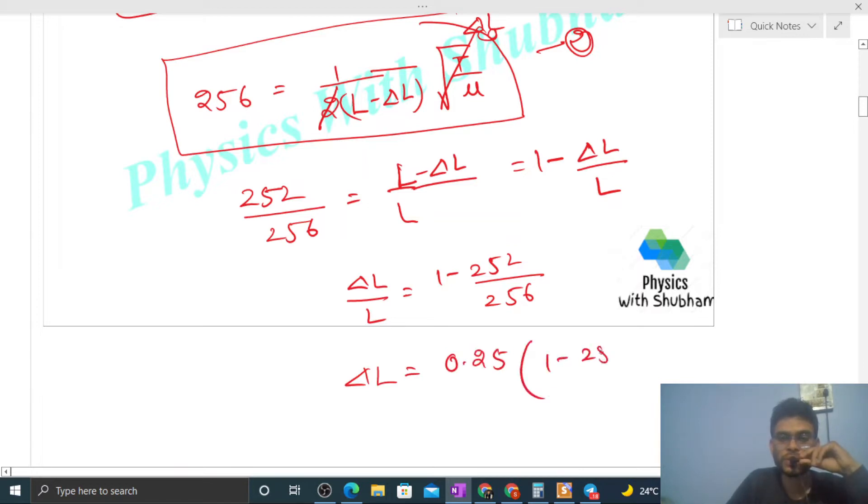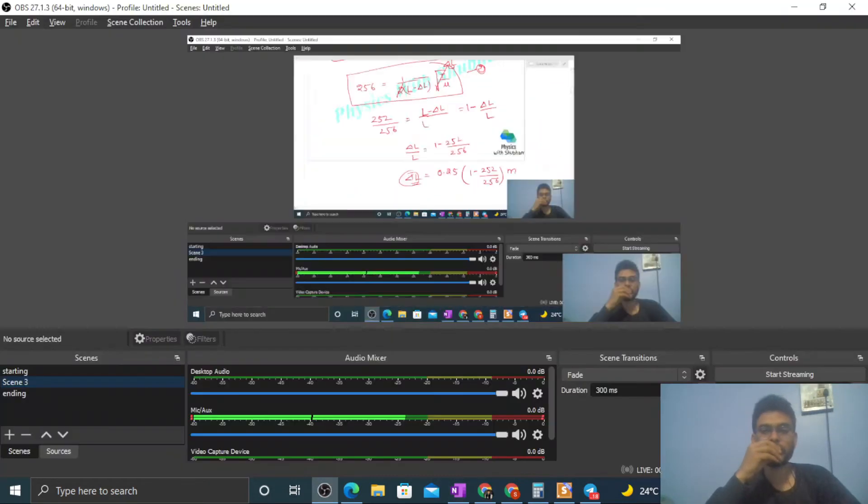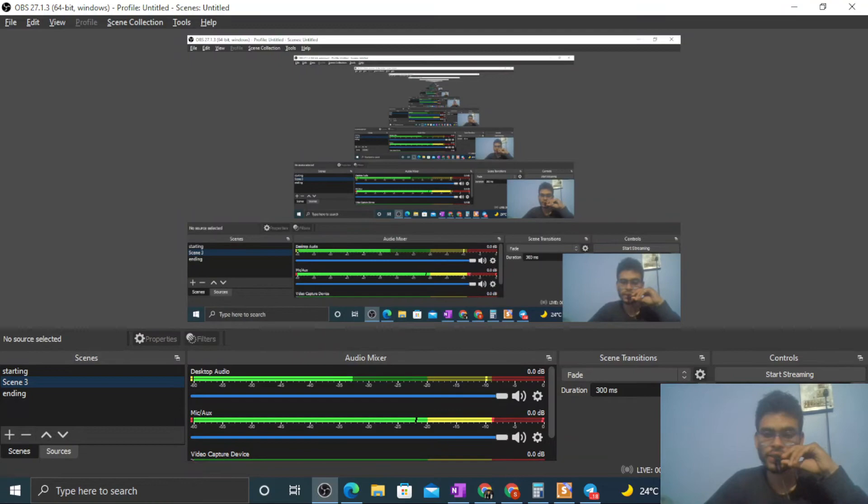This will be the value of length in meters. By this much length you have to decrease so that the beat frequency becomes zero. So I think you have understood. Let me know if you still have any confusion. Okay, study hard, best of luck, bye!